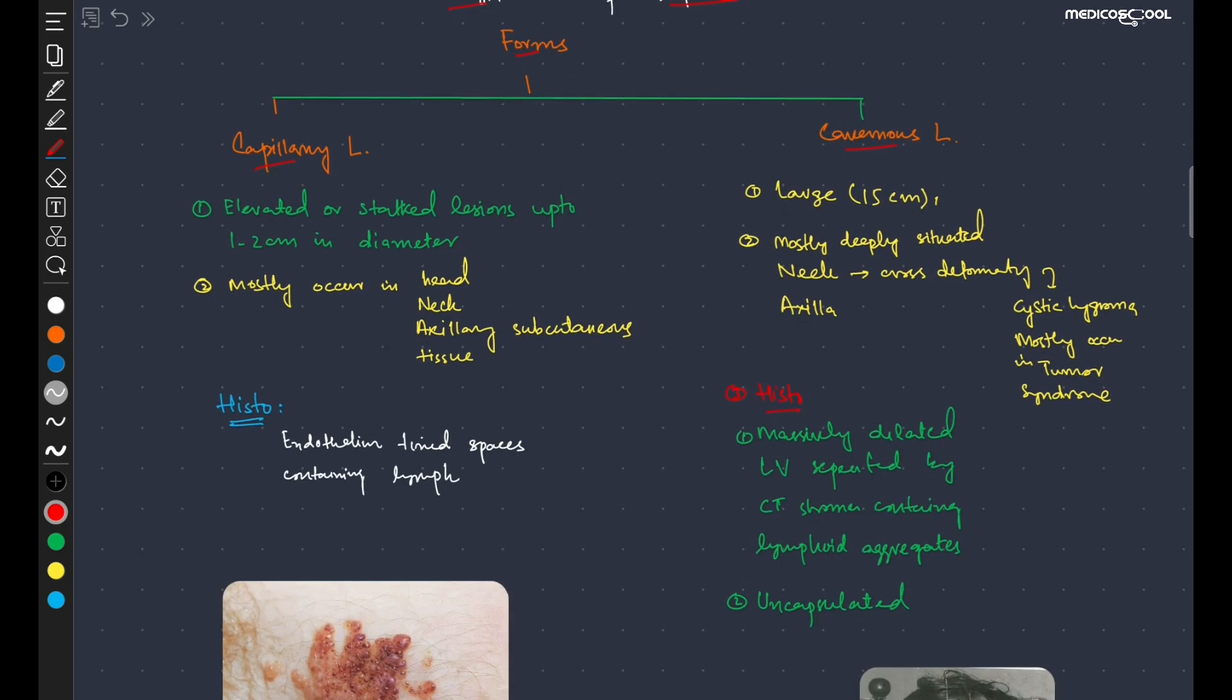Talking about capillary lymphangioma, it is an elevated or stalk lesion. Elevated means that it is elevated from the skin, and stalk means that it is hanging from the skin through a stalk. It is up to one to two centimeters in diameter.